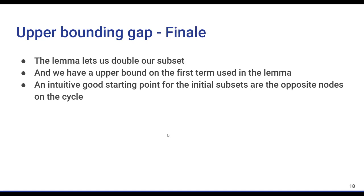we just have to use our k-hop results and by doing so we get this inequality. Now, to sum up the proof, the lemma lets us double our subset. Our results from the k-hop functions provide us with an upper bound on the term appearing in the lemma. And phi_(n/2) at time t also gives us a good starting point, which are subsets of size 2 consisting of opposite nodes on the cycle. By using these all together, an upper bound of big O of √n log n can be achieved.